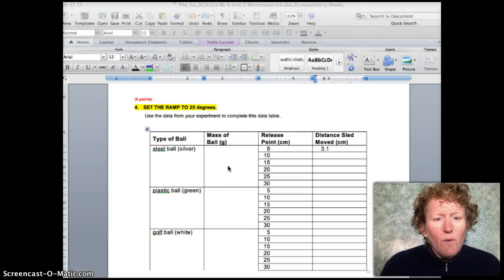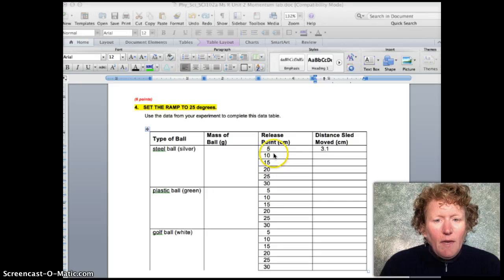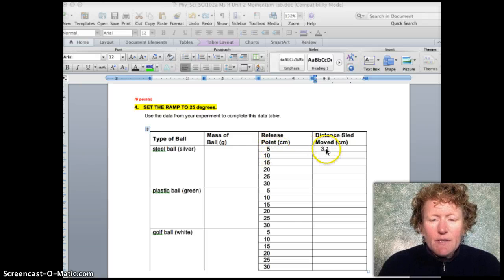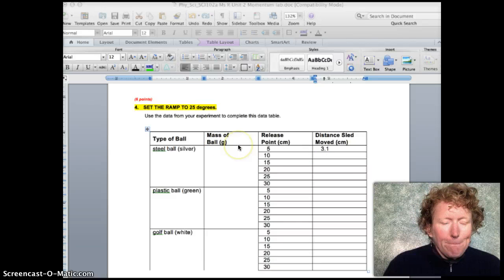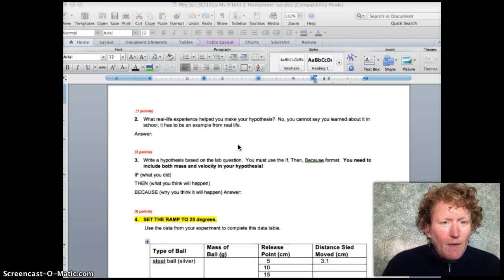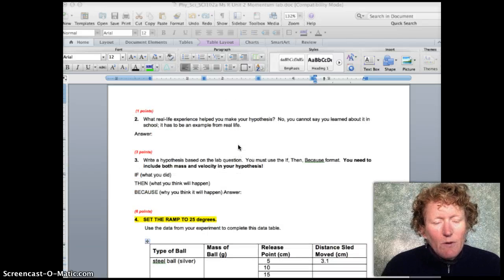Here's question number four on the data sheet, and you can see I'm working on the steel ball. The release point here was five centimeters and the distance the sled moved was 3.1. We still need to take the mass of the ball here.